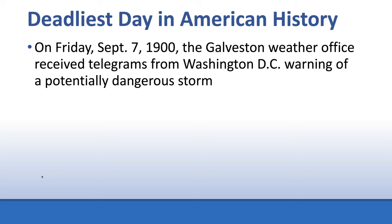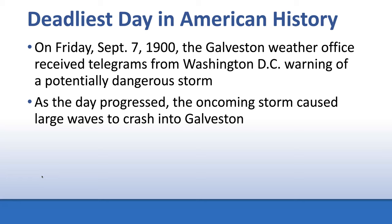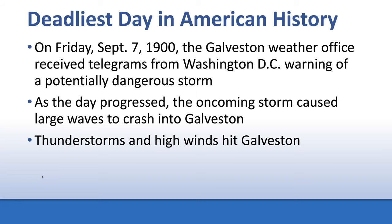Unfortunately, in Texas they didn't believe a massive storm could ever do anything harmful to Galveston — they believed they were safe. As the day progressed, the oncoming storm caused large waves to begin crashing into Galveston. Thunderstorms and high winds hit the city. They had dealt with large waves and storms before, but had never dealt with anything as massive as what was bearing down on them, and they had no way of forecasting it.